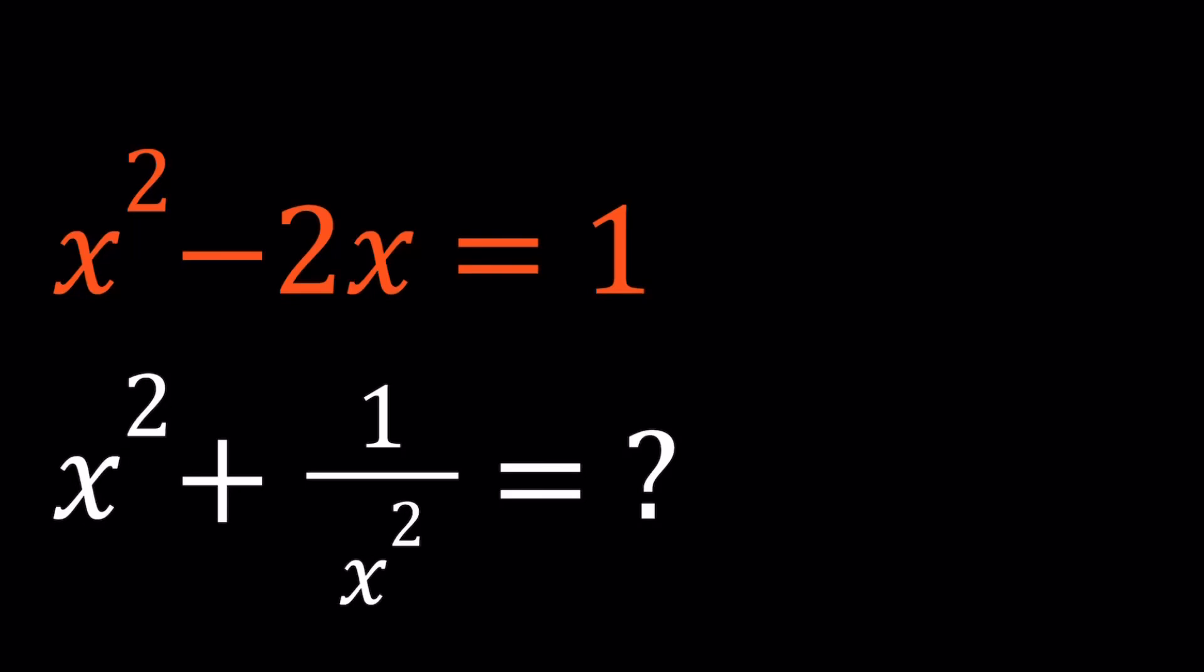Hi everyone. In this video, we're going to be dealing with polynomials and some rational expressions. We're given that x squared minus 2x equals 1, and we're supposed to evaluate x squared plus 1 over x squared.